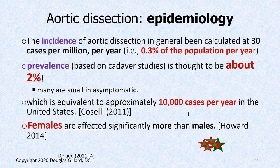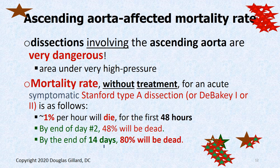What's the epidemiology for aortic dissections? The incidence is about 30 cases per million people — about 0.3% of the population each year. The prevalence, meaning the percentage of people walking around with one of these, is about 2%. It's thought to be much higher because many are completely asymptomatic. That equates to about 10,000 cases per year. Females are also slightly more prone to develop these than males.